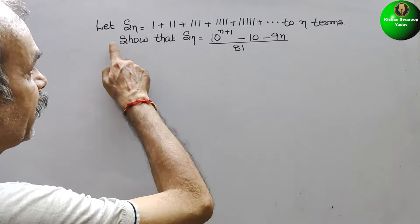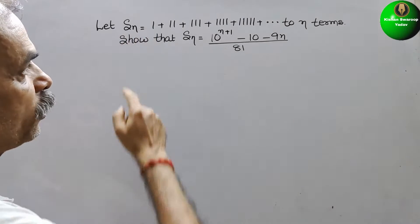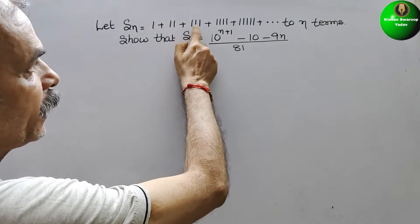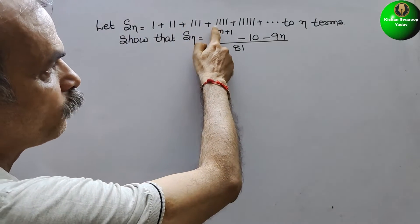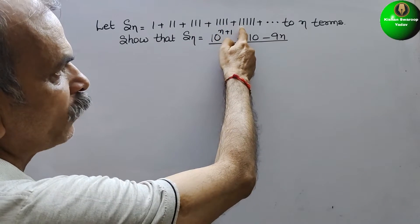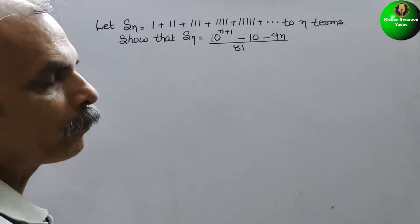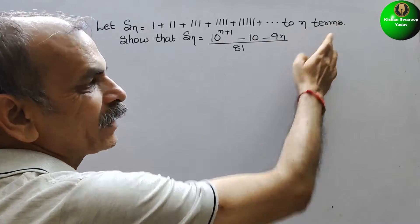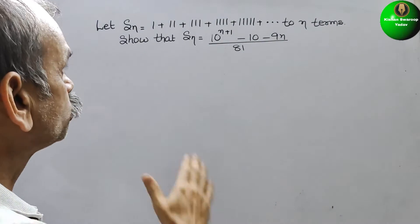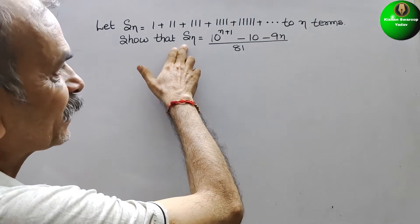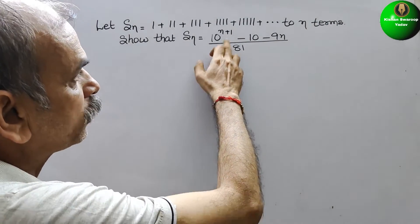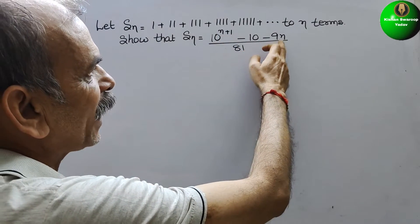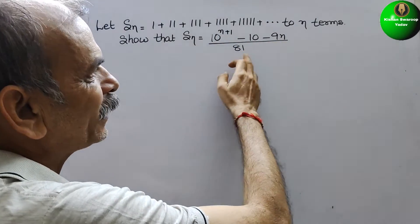The question is: let Sn equal 1 plus 11 plus 111 plus 1111 plus 11111 up to n terms. Show that Sn equals (10^(n+1) minus 10 minus 9n) divided by 81.